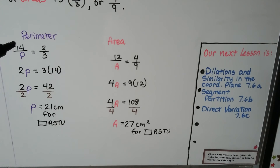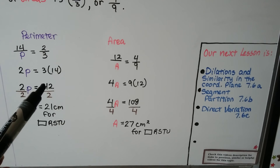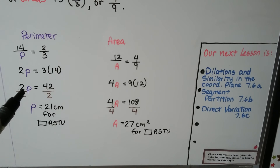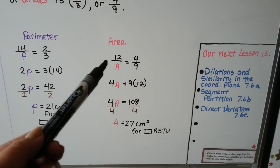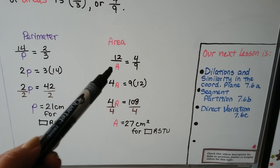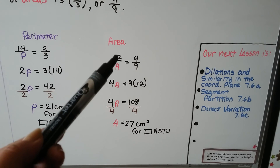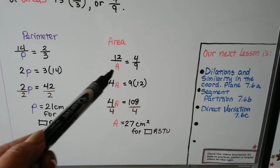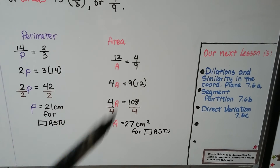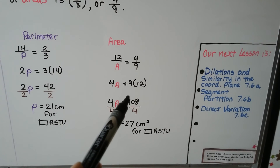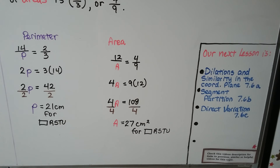The perimeter of rectangle MNPQ is 14. To find the perimeter of RSTU, using the ratio 2/3 equals 14 over P: cross multiplying gives 2P equals 3 times 14, which is 42. Dividing by 2, the perimeter of RSTU is 21 centimeters. The area of MNPQ is 12 square centimeters. Using the area ratio 4/9: 4A equals 9 times 12, which is 108. Dividing by 4, the area of RSTU is 27 square centimeters. Remember to include the squared unit for area.